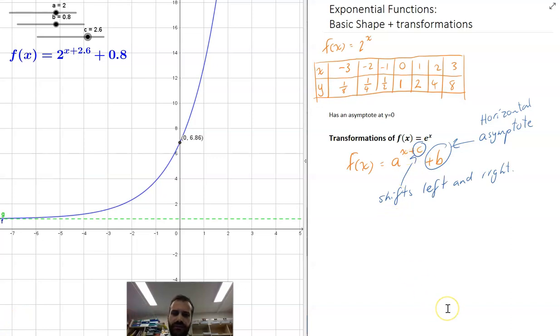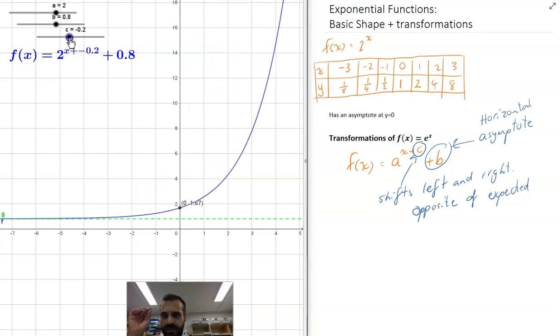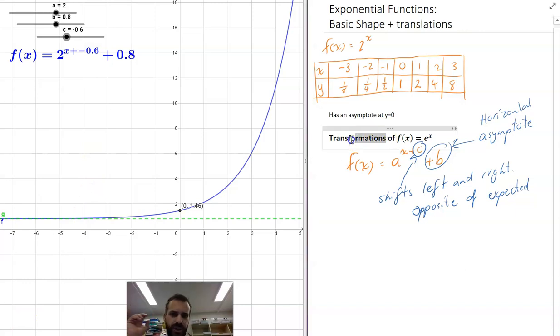So that c value is going to shift it left and right, but the opposite of expected. So what I mean by that is if the c value is 2.6, that means it's shifted 2.6 to the left. And if it's negative something, it means it's shifting to the right. But this has been covered in function transformations.